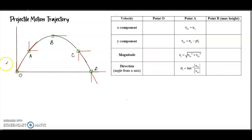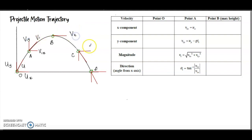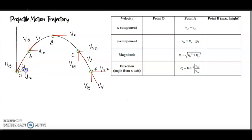Next we move to the projectile motion trajectory. We need to understand what happens to the velocity at each point — O, A, B, C, and D. At each point we need to know the velocity and direction. To solve this, remember how to resolve a vector, since velocity has x and y components as well as magnitude and direction.